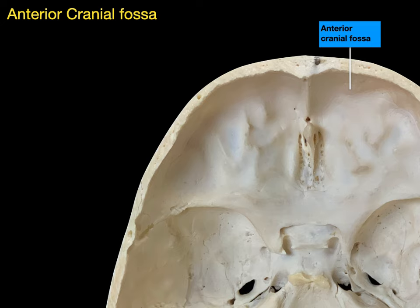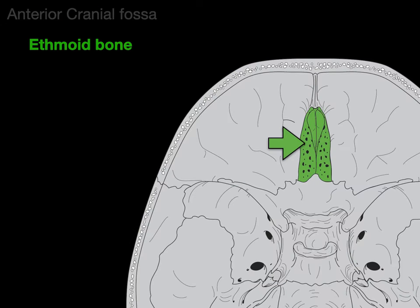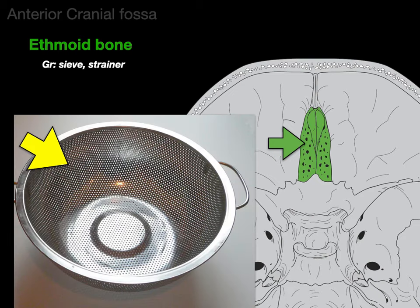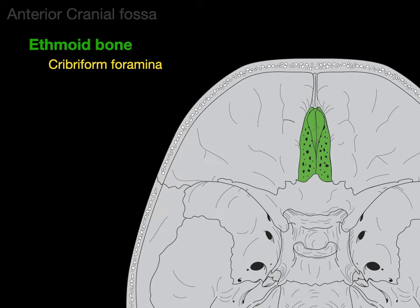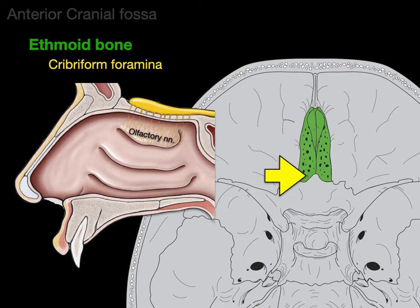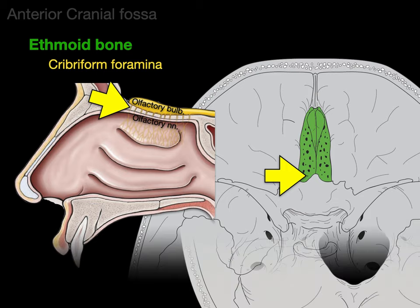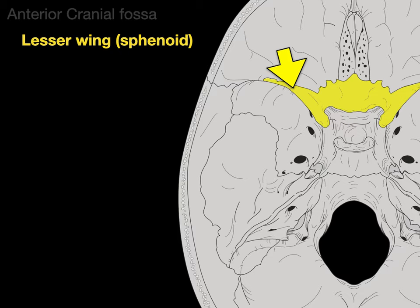In the anterior cranial fossa is the ethmoid bone — ethmoid is Greek for a sieve or strainer, because the bone looks like a colander. The cribriform plate has all of these holes called the cribriform foramina. Those openings allow for the traversing of the olfactory nerves from the nasal cavity up to the olfactory bulb, which brings the sensation of smell to the brain. And the lesser wing of the sphenoid bone is what separates our anterior and middle cranial fossae.